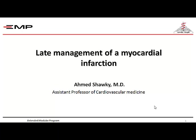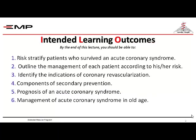What are our intended learning outcomes? How to stratify our patients who survived the acute phase of an acute coronary syndrome, outlining the management and how we're going to treat each patient, the indications of coronary revascularization, what are the components of secondary prevention, the prognosis, survival and death rates of an acute coronary syndrome, and management in the older age groups.